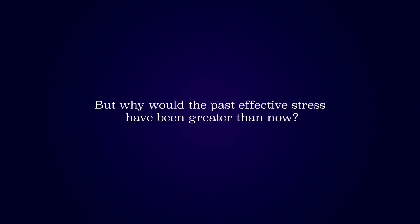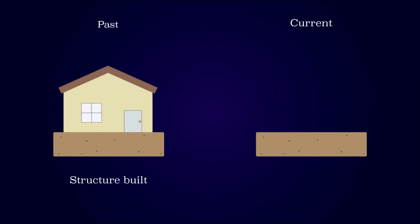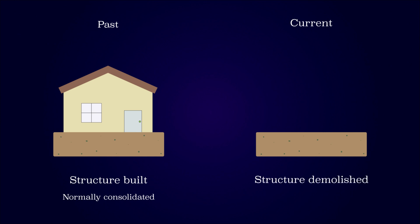But why would the past effective stress have been greater than now? The higher past effective stress could originate from multiple things. If a structure is built on top of a soil, the effective stress increases as consolidation occurs. The soil is still normally consolidated at this point, since the effective stress present represents the largest effective stress experienced by the soil. If the house is demolished and the load is removed, the soil will start behaving as overconsolidated, since the past effective stress was higher.